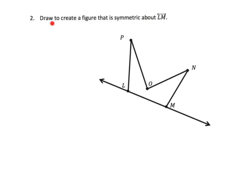We're supposed to draw to create a figure that is symmetric about LM. So here's our line LM and what we want to see here is exactly reflected on the other side as if we're folding a piece of paper in half, right? The idea is we're going to measure with a straight edge and we want to do it perpendicular from each point to the line.